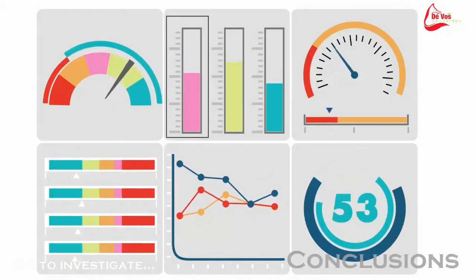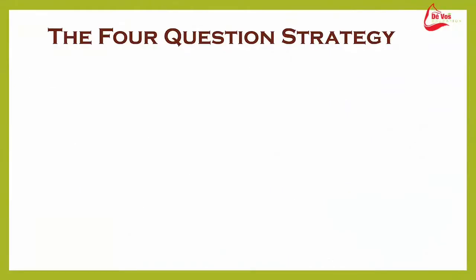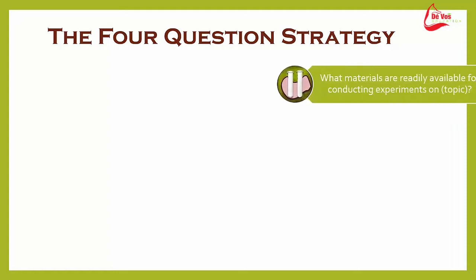Let's look at some important steps in planning a scientific investigation. When planning an investigation, I like to use the four question strategy. First, I need to know what materials are available for conducting experiments on my topic of choice at school, at home, at college, university, or anywhere else I have access to.